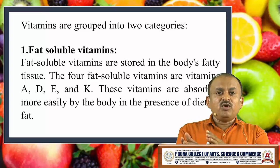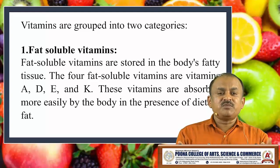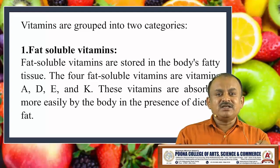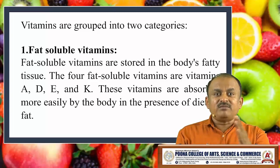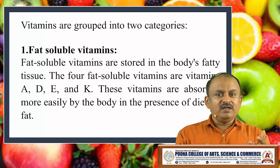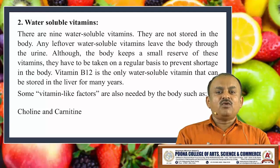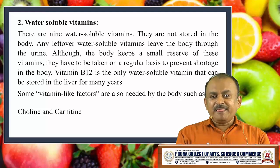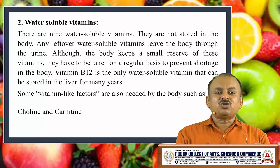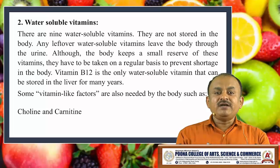For the degradation of proteins, the breakdown of carbohydrates, and the intake of fat, vitamins are required to enhance these processes. Until and unless we add vitamins to the diet, all these metabolic processes will not happen properly in our body. The second category is water soluble vitamins. There are nine different water soluble vitamins, and they are not stored in our body — we have to take them from external sources. Any leftover water soluble vitamins leave the body through urine. Although the body keeps a small reserve, they have to be taken regularly to prevent shortage.